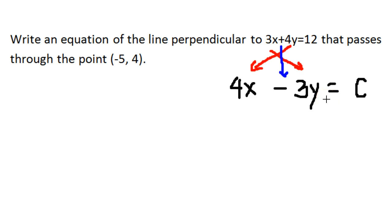We just want to reiterate that the relationship between the slopes of perpendicular lines is that they are negative reciprocals of one another. And it's equal to the number c, which means that number could take on any value, because there are actually infinitely many lines that are perpendicular to 3x plus 4y equals 12.